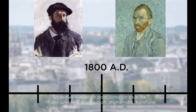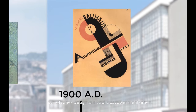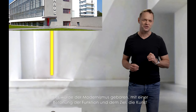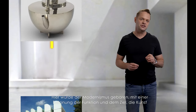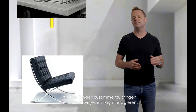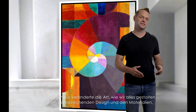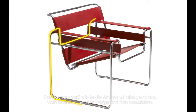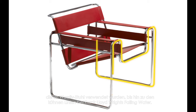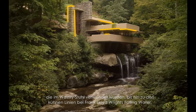Fast forward to the 1920s, where science, mathematics, art, and beautiful design came together at the Bauhaus. This is where modernism was born, with an emphasis on function and the goal to bring art back together with the things we interact with every day. The Bauhaus changed the way we design everything, from the groundbreaking design and materials of the Vassily chair to the bold lines of Frank Lloyd Wright's Fallingwater.